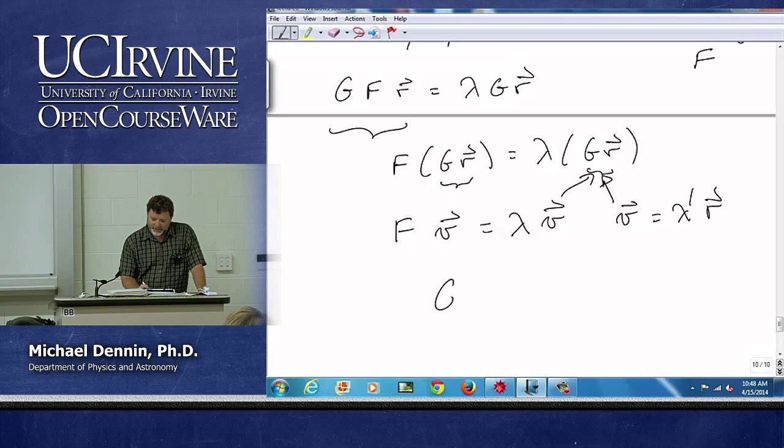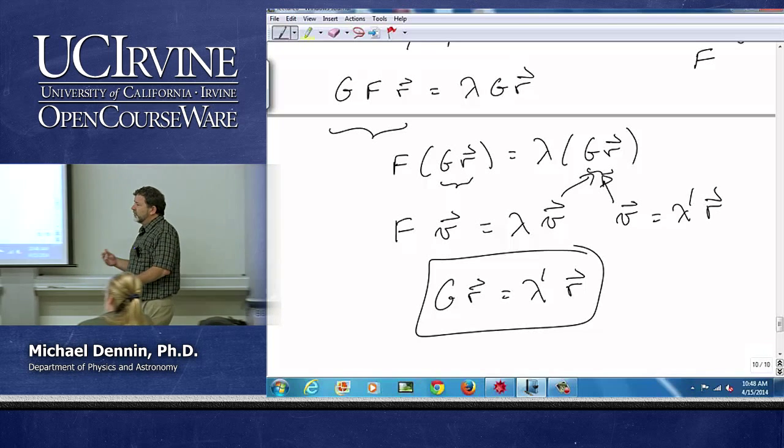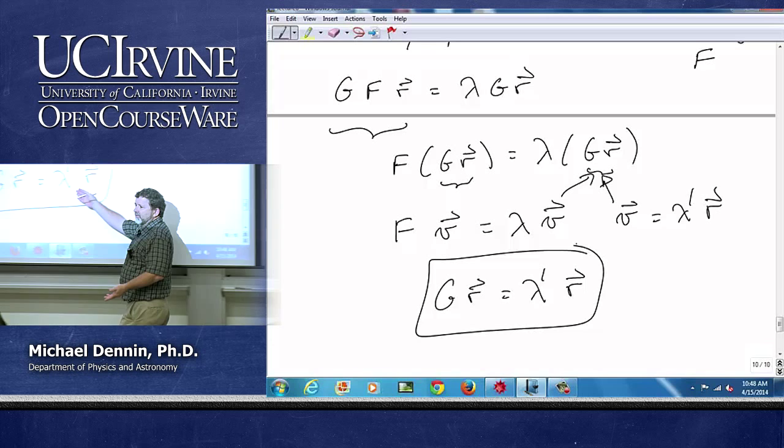v is gr, right? That's what I did. So g times r equals some other number times r. So since r was an eigenvector of f it's also an eigenvector of g. It just might have a different eigenvalue.